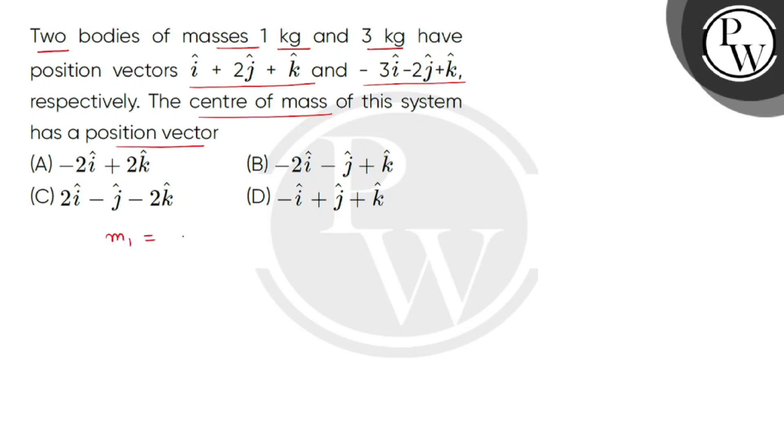Given we have a body whose mass is 1 kg and a second body whose mass given is 3 kg. Our first body's position vector r1 is equal to i cap plus 2j cap plus k cap and second body's position vector is minus 3i cap minus 2j cap plus k cap.